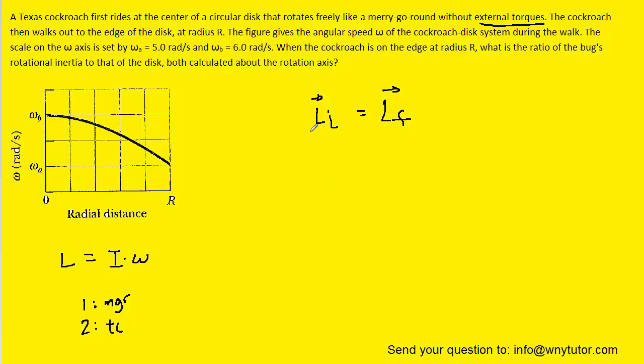So with those notations in mind, we can expand the initial angular momentum to include both the merry-go-round as well as the Texas cockroach. So here we have the initial angular momentum for the merry-go-round, and here is that of the Texas cockroach.